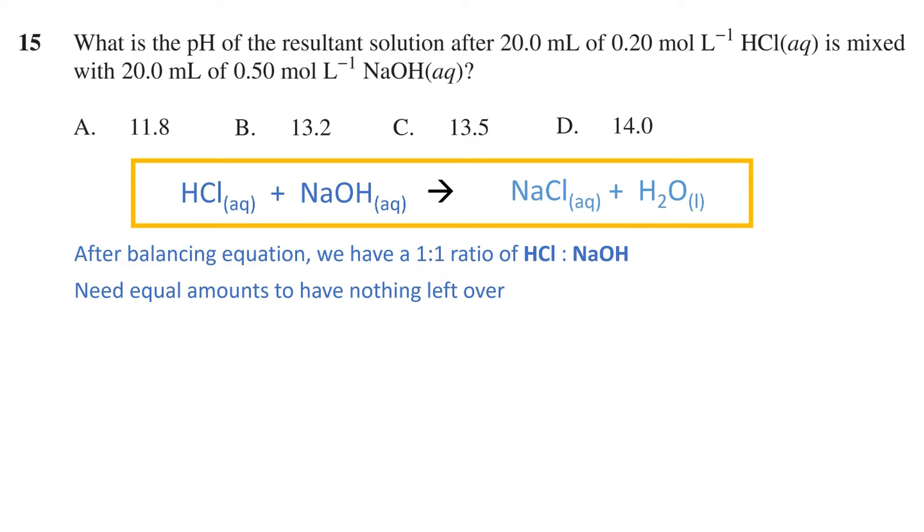Therefore, we need to calculate the number of moles of HCl and NaOH at the start of the reaction to determine which is the limiting reagent, that is, the one that gets used up completely. Using n equals C times V, we can calculate the number of moles of each. For HCl, we multiply its concentration of 0.2 moles per liter by its volume of 0.02 liters to find 0.004 moles of HCl. For NaOH, we do the same to get 0.01 moles.